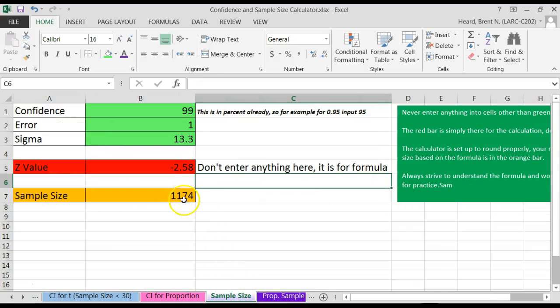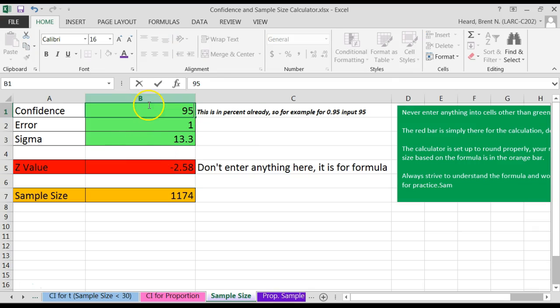At the bottom, we're going to click the sample size, and they want a 95% confidence. All you have to do is put in 95 right there. Hit enter. The error is 1. The sigma is 10.5. I click the enter button. You've got to click the enter button every time you enter something.